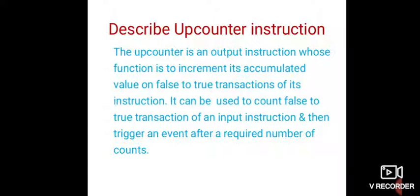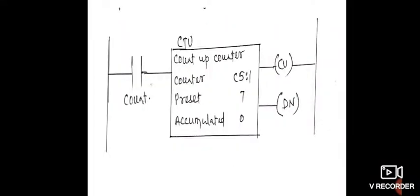For example, after 10 or 100 people have entered, the door can automatically close, or when a parking lot is full, the main door will be closed. In such cases, up counter instructions are used. The ladder diagram for the up counter instruction can be seen in the diagram.